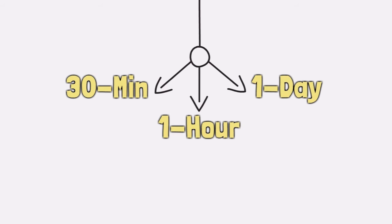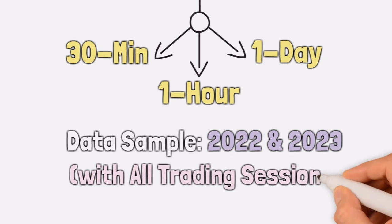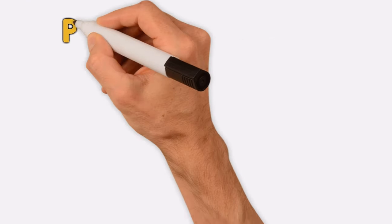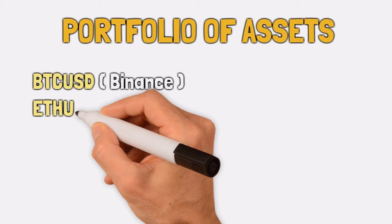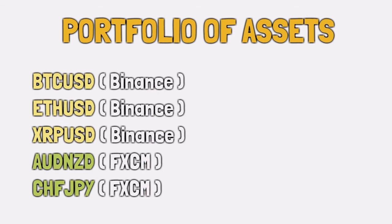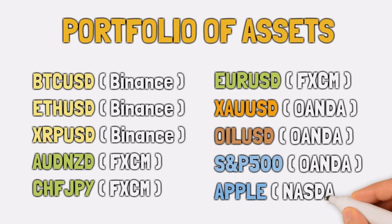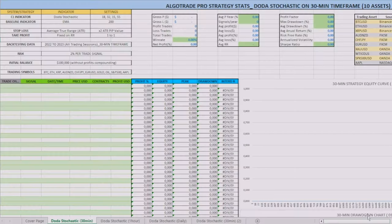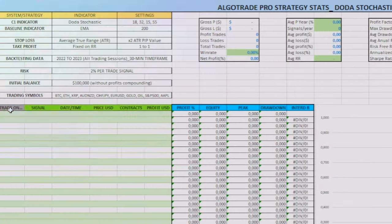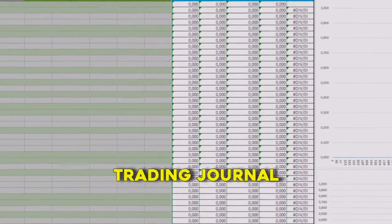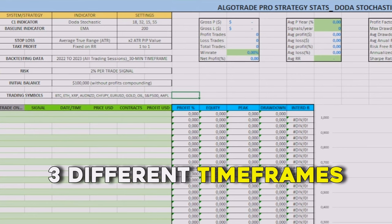On every timeframe, I will use the data sample from 2022 and 2023, with all the available trading sessions, and an efficient and diverse portfolio of assets from different markets, which are Bitcoin, Ethereum, XRP, 3 currency pairs, Gold, Oil, the S&P 500 index, and the Apple stock. I will present the results of every asset individually and also together, because for every backtest I will create a trading journal with all the trades given by the indicator in the 3 different timeframes.